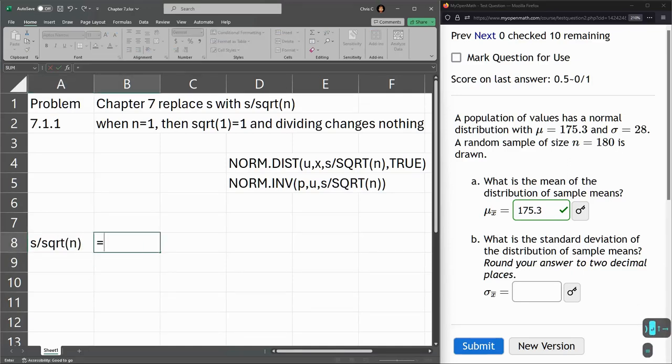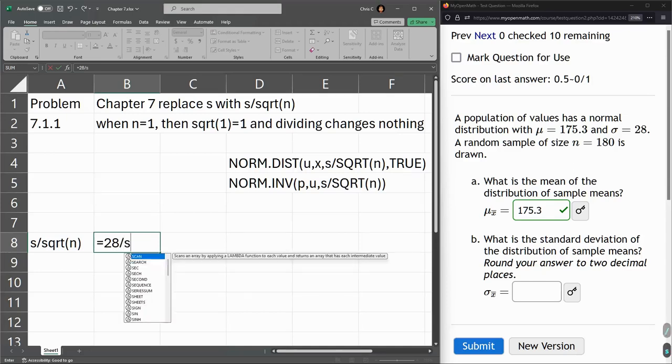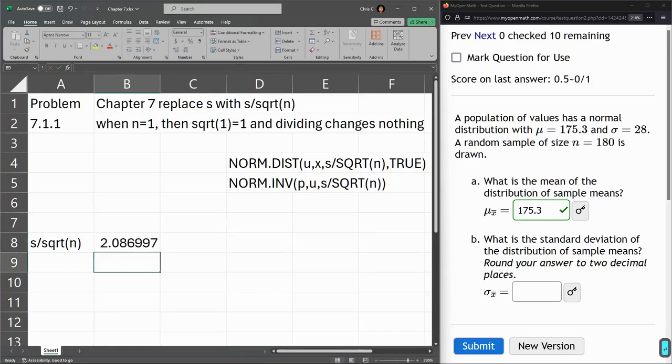That'll be our label, and this is equal to. So in this problem, 28 is our standard deviation. And we're dividing by the square root of 180, that is our sample size of N. And this number is our shrunken standard deviation here.